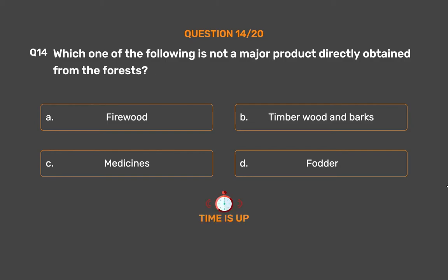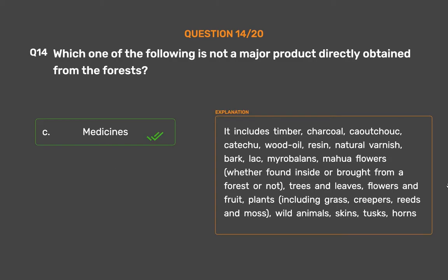The correct answer is Option C: Medicines. Major forest products include timber, charcoal, kutchok, catechu, wood oil, resin, natural varnish, bark, lac, myrobalan, mahua flowers, trees and leaves, flowers and fruit, plants including grass, creepers, reeds and moss, wild animals, skins, tusks, and horns.